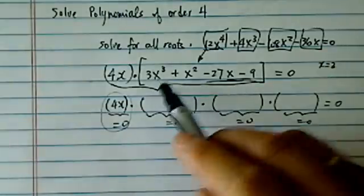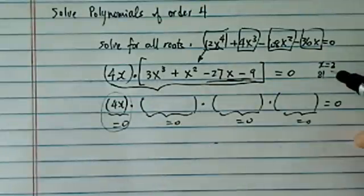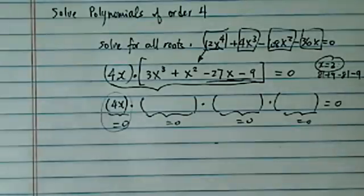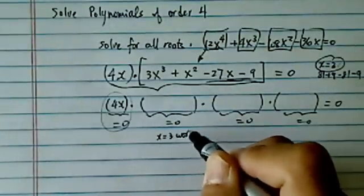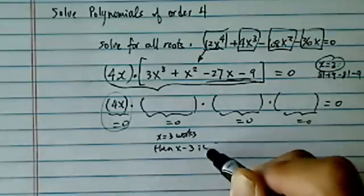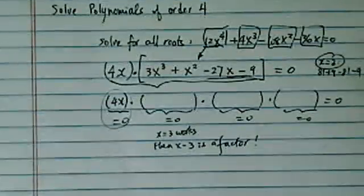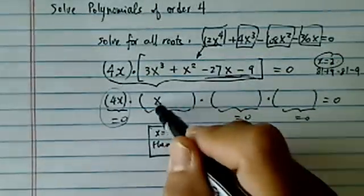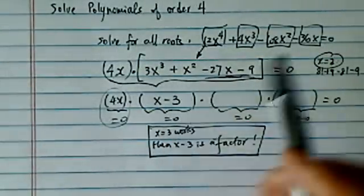2 didn't quite work out. This negative side is still a little heavy. And then it turned out x = 3 works. The reason it works is the first part was 81, so 3 times 27 and then plus 9. This chunk was -81 and I have a -9. So I figured out x = 3 works. If x = 3 works, then x - 3 is a factor. This is actually a pretty important thing. If you can recognize this one, you're almost home.